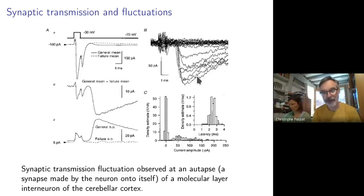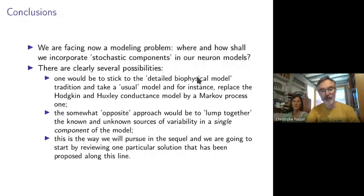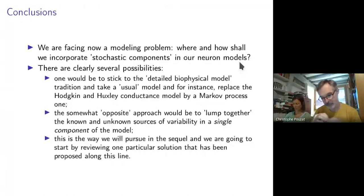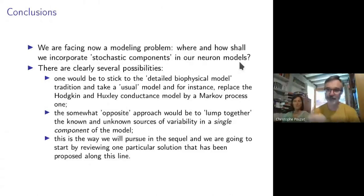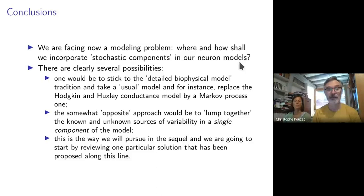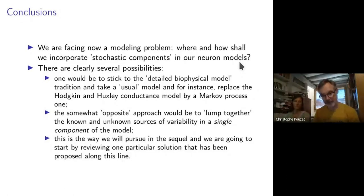Once you realize these sources of variability exist, it makes full sense to have models with strong stochastic components. The question becomes: where do you introduce stochasticity in your model? The direct way would be to take the usual detailed biophysical model with detailed morphology and voltage-gated conductances, and use a Markov process instead of the Hodgkin-Huxley model. Some people do that, but the main problem is that it takes a lot of time to compute and you have a huge number of parameters. The opposite extreme — and the one we took — is to lump all sources of variability at a single locus in the model. That's what Eva will shortly explain.